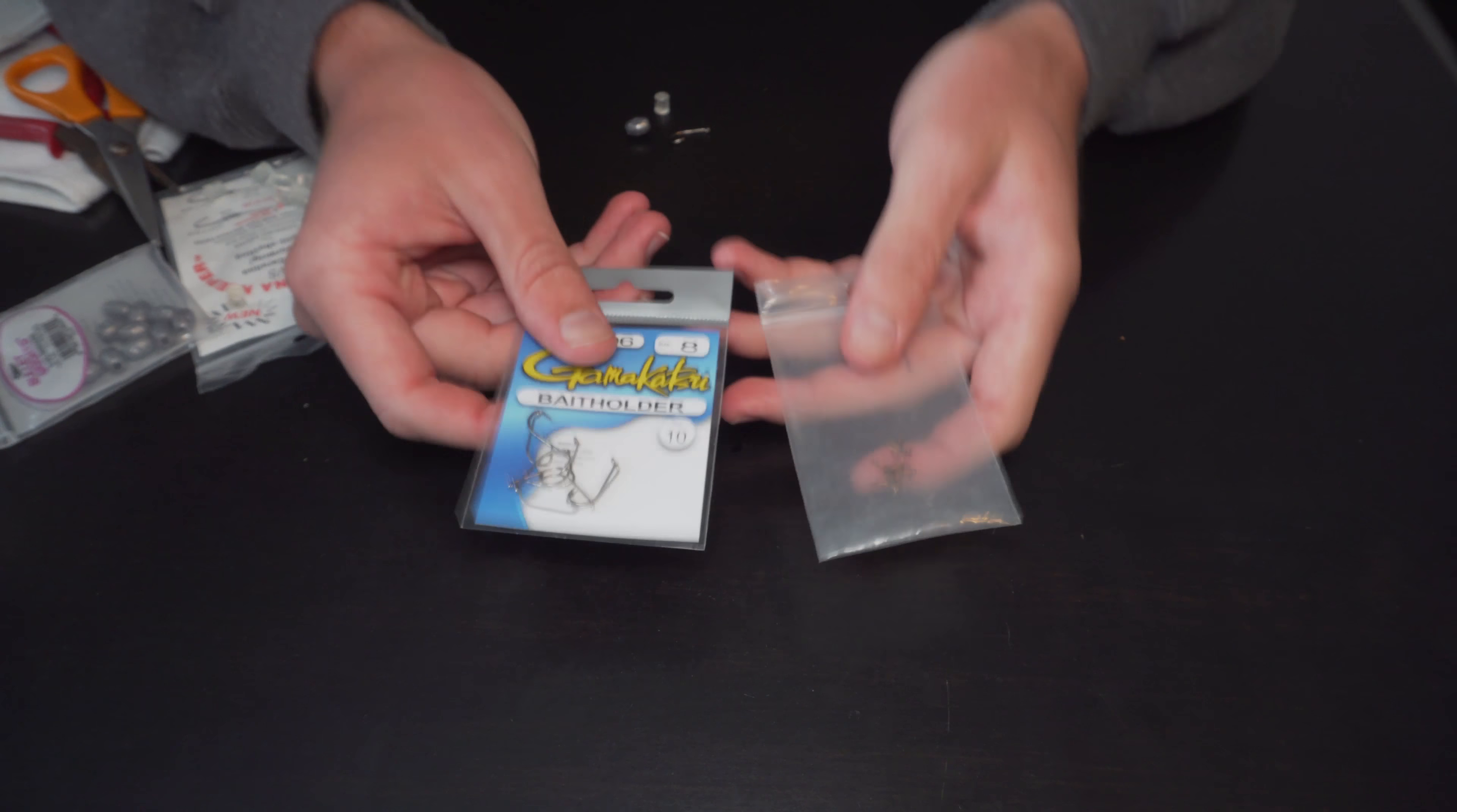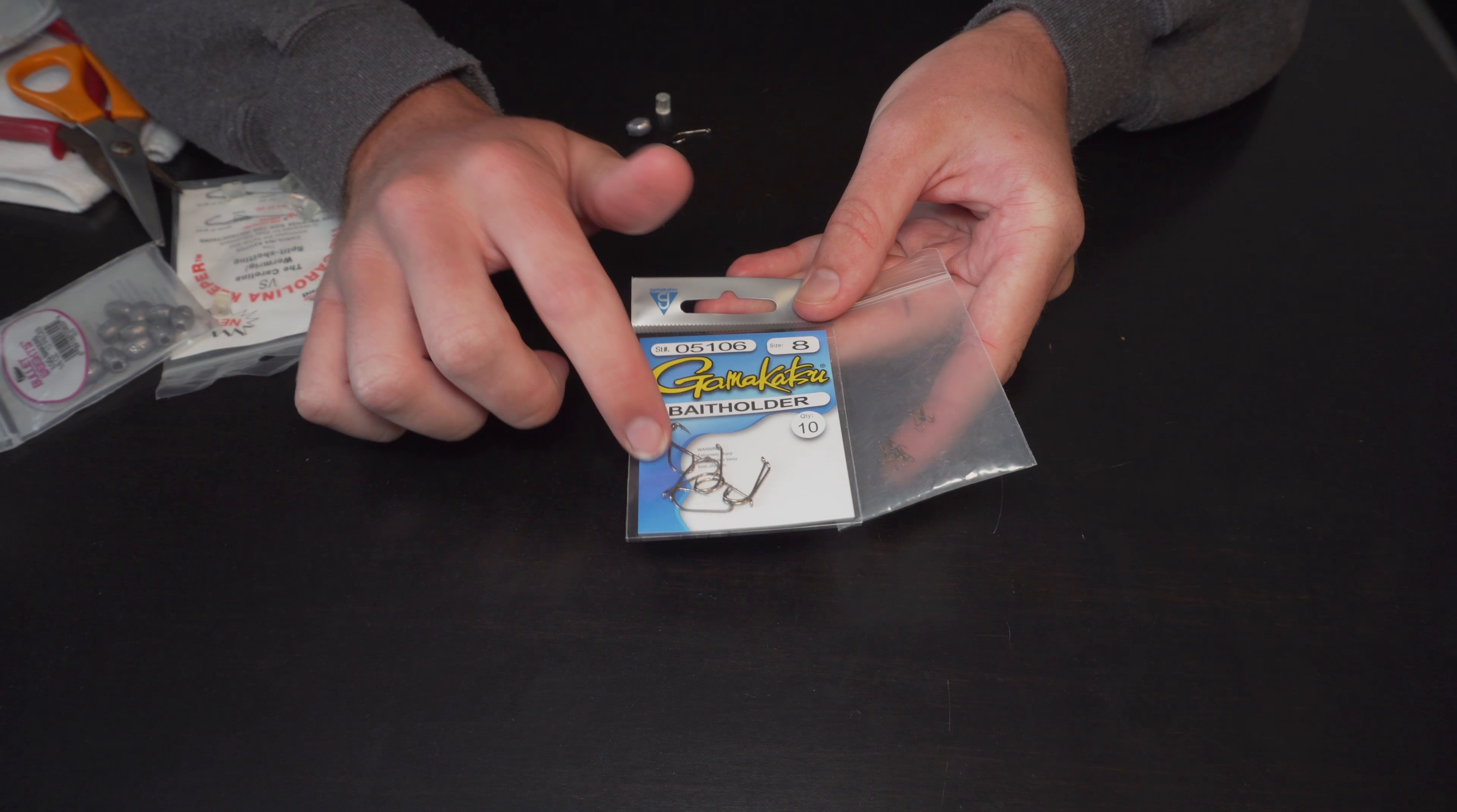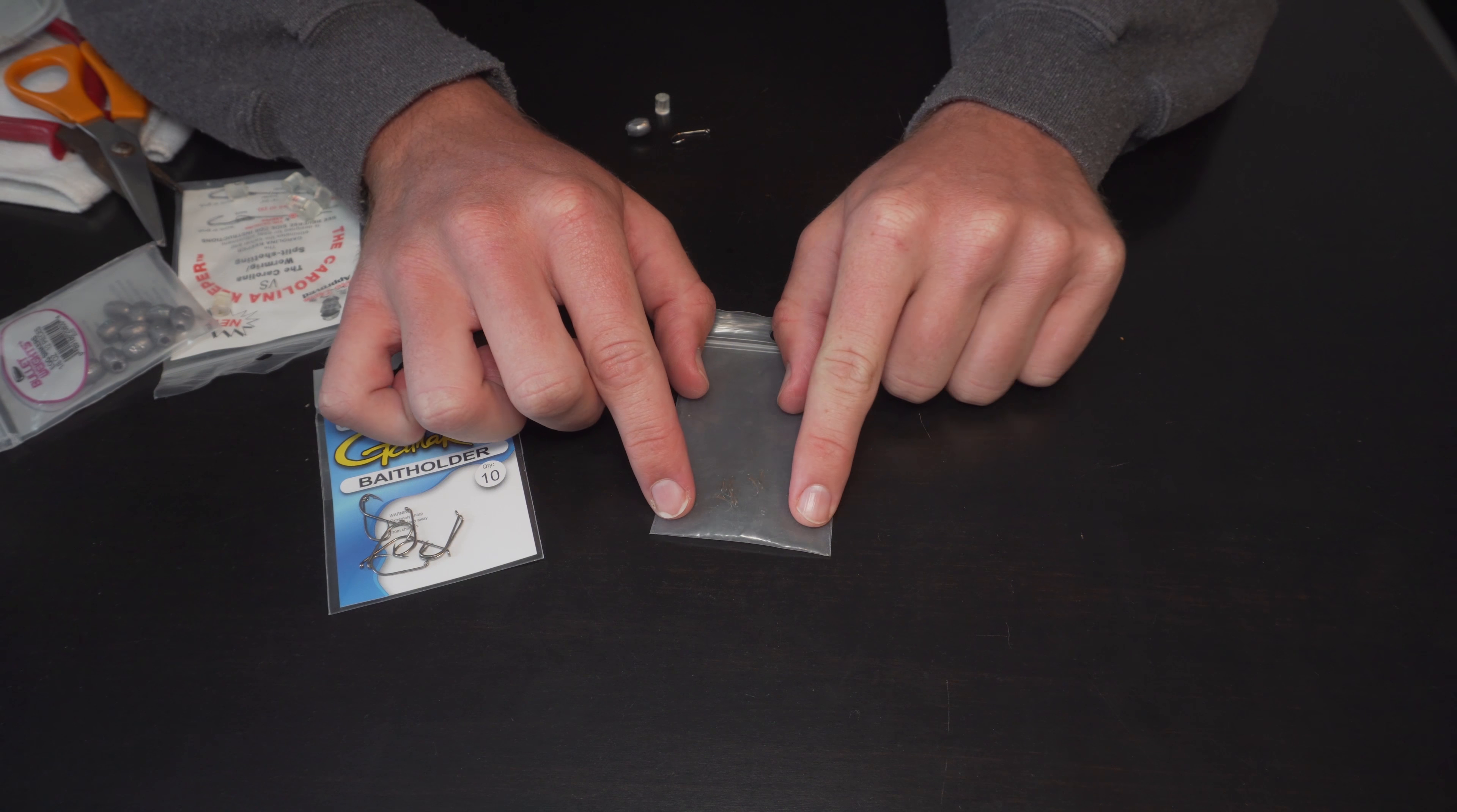Alright guys, so let's get to tying this rig here. Now first I'm going to show you everything you're going to need. The first thing you're going to need is your hooks. Now if you're throwing worms, I would go with a bait holder hook, preferably a size 8. You can use a 6 or a 10, but I like 8, it's a good middle range.